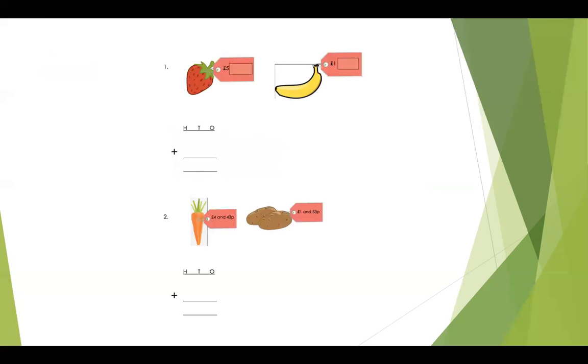So for your home learning today, you've got a couple of questions where you've got to add the fruit and vegetables together using the column method. Remember if you're not sure or you're struggling a little bit, feel free to join one of our Zoom calls and we'll be happy to help.